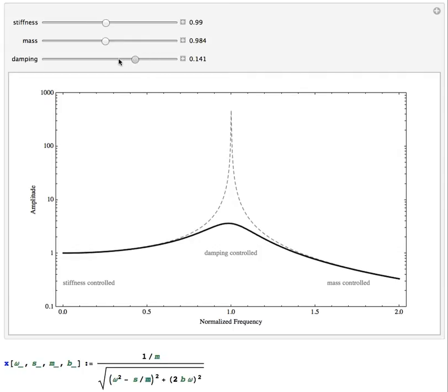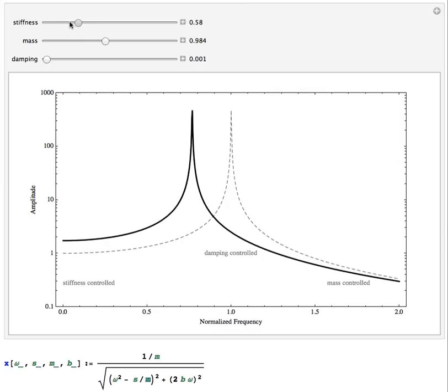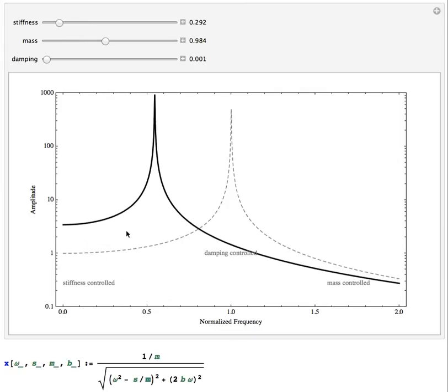Changing the damping only has an effect near resonance. If I do the same thing with stiffness, if I change the stiffness parameter, I can see that if I make the stiffness smaller, it lowers the resonance frequency, as we would expect.